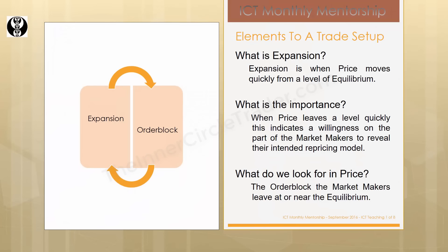What is expansion? Expansion is when price moves quickly from a level of equilibrium. Expansion couples directly with the tool of an order block. When price leaves a level quickly, this indicates a willingness on the part of the market makers to reveal their intended repricing model. If we're in a consolidation or point of equilibrium and price moves up quickly, that gives us an indication to look for a bullish order block. We don't want to chase price — we're going to wait for price to come back down into the order block near or at the equilibrium price point.